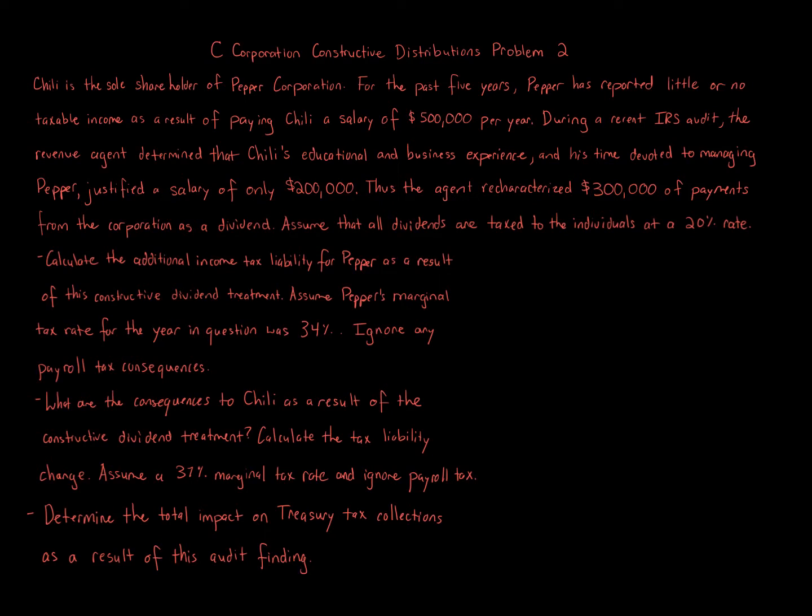Thus, the agent recharacterized $300,000 of payments from the corporation as a dividend. Assume that all dividends are taxed to the individuals at a 20% rate. Calculate the additional income tax liability for Pepper as a result of this constructive dividend treatment.